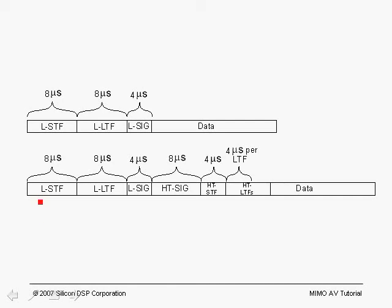For a high throughput packet, we have basic compatibility with the legacy 802.11a up to the end of the signal field. After that, the packet is intended for 11n type devices that can decode a high throughput packet. However, all devices will be able to decode up to and including the signal field. So we have the legacy short training field at 8 microseconds and the legacy long training field at 8 microseconds.